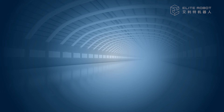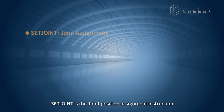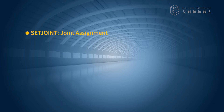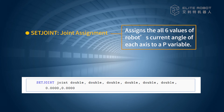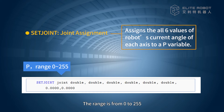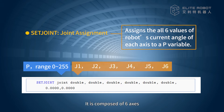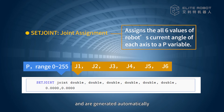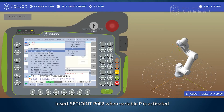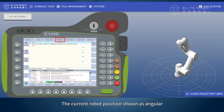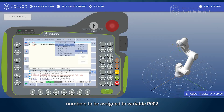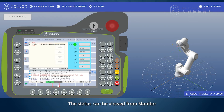Set Joint. In JBI, Set Joint is the joint position assignment instruction. It assigns all current joint angles to a P variable. Joint refers to joint position variable P, with a range from 0 to 255. It is composed of six axes; axes J7 and J8 are 0 by default and are generated automatically based on the current robot position. The current robot position shown as angular numbers will be assigned to variable P002, and the status can be viewed from Monitor Variable.